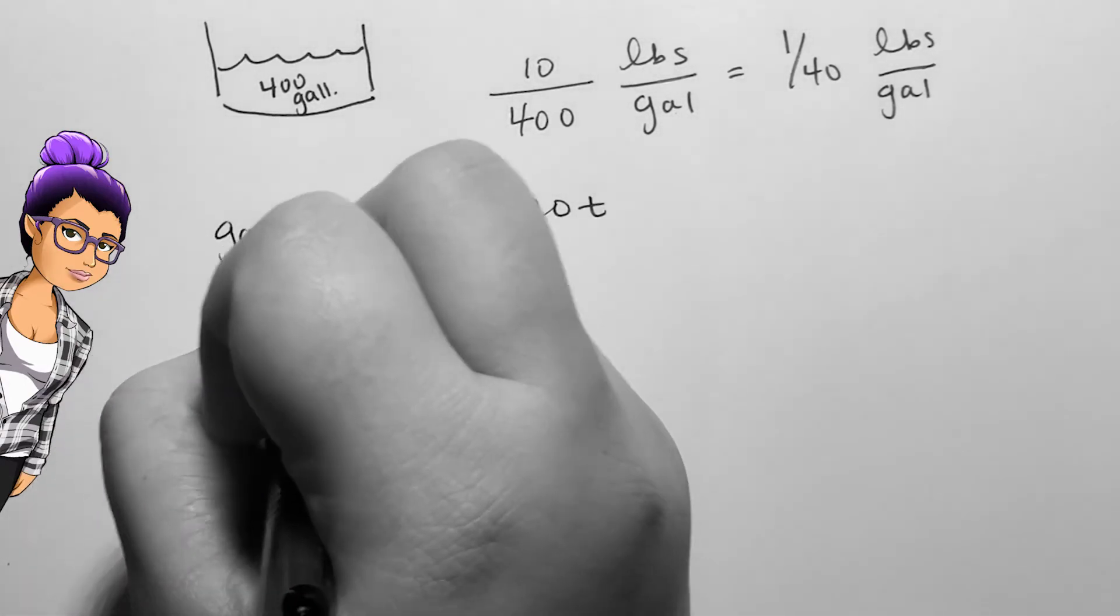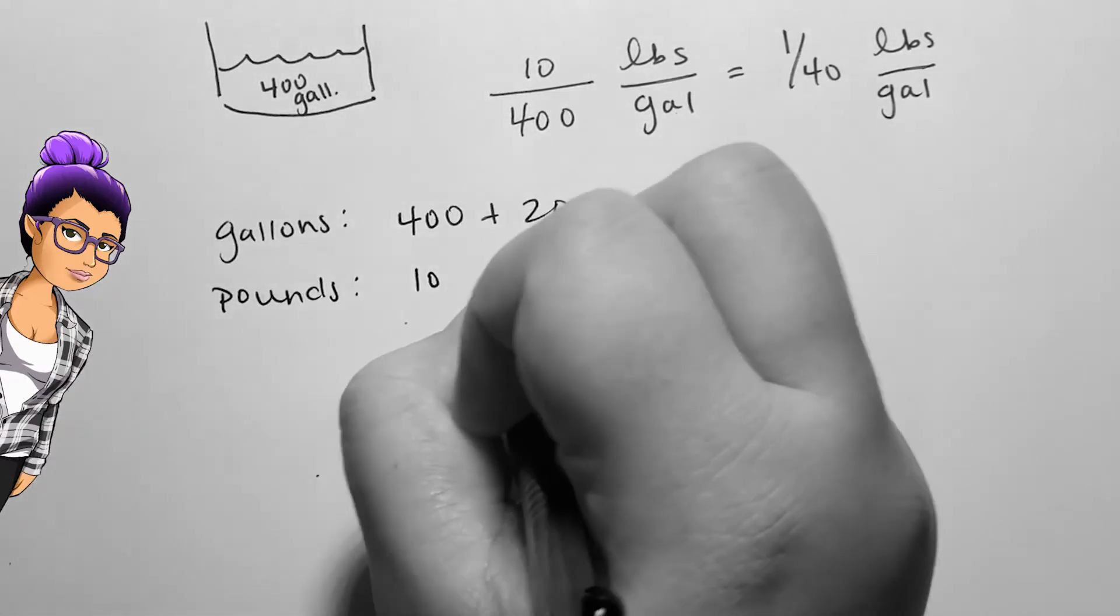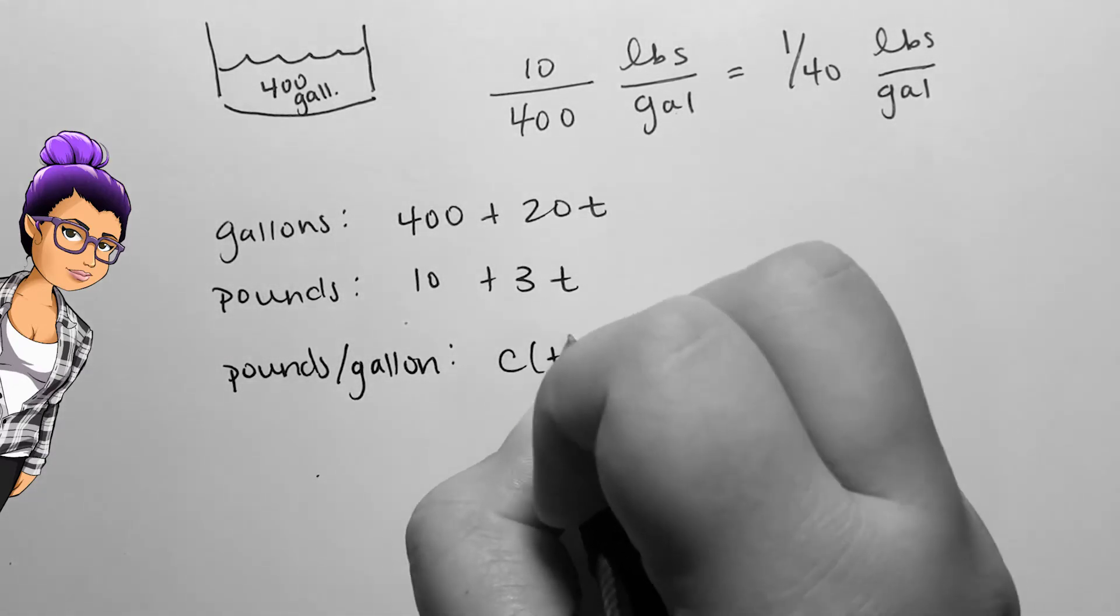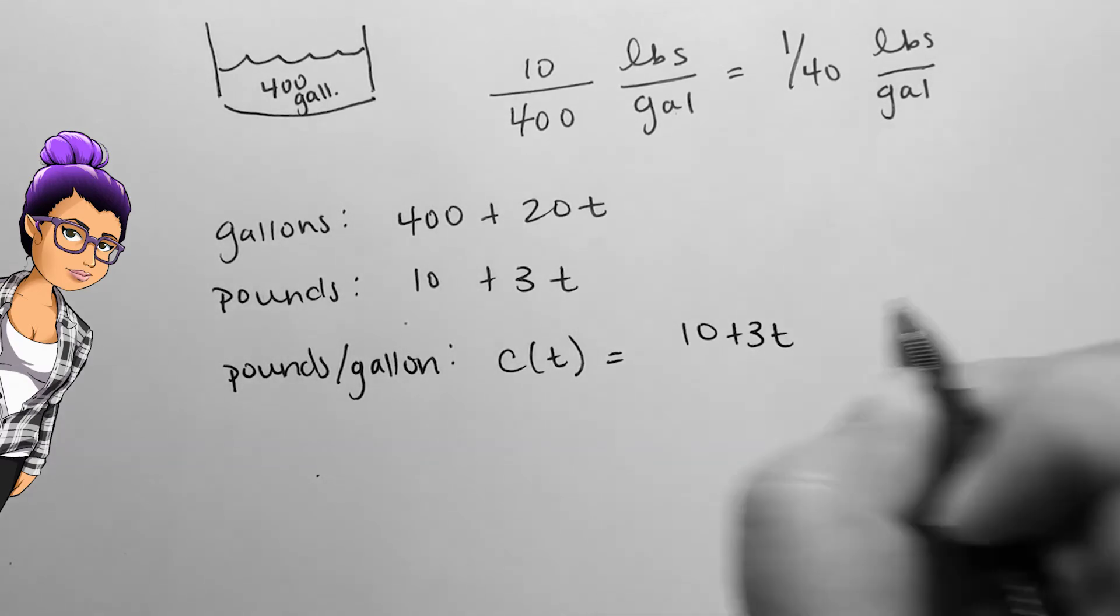At the same time, sugar is poured into the tank at a rate of 3 pounds per minute. I could represent pounds of sugar by 10 plus 3T, where T is minutes that have passed.